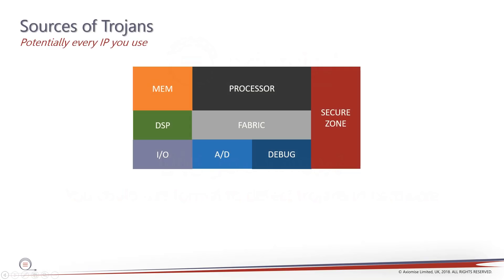If you consider the sources of trojans and think of an SOC — whether you're a processor-making company, designing memories, DSPs, fabric, analog to digital converters, debug logic, or secure IP — every piece of IP that you are designing and building into an SOC could be a potential source for a trojan. That's because if you haven't made it yourself, if you've procured it from a third party, somebody else could have inserted the trojan.